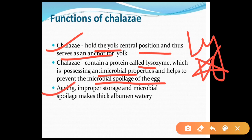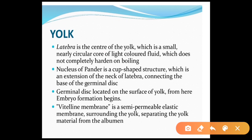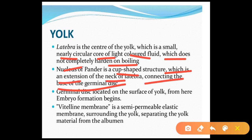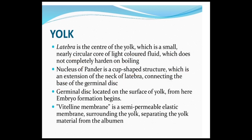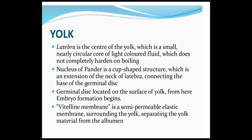Aging improves storage and microbial spoilage makes the thick albumin watery. The latebra is the center of the yolk — a small, nearly circular core of light-colored fluid that does not completely harden on boiling. The nucleus of Pander is a cup-shaped structure extending from the neck of the latebra and connecting the base of the germinal disc. The germinal disc is located on the surface of the yolk; embryo formation begins from here. The vitelline membrane is a semi-permeable elastic membrane surrounding the yolk and separating the yolk material from the albumin.